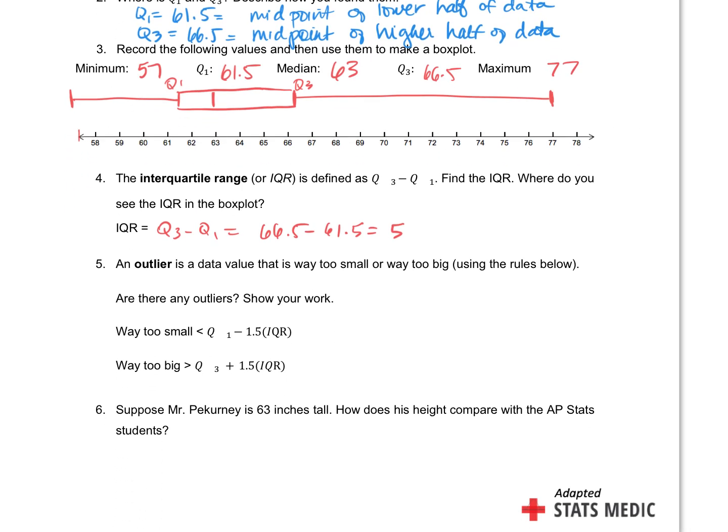Now an outlier is a data value that is way too small or way too big. What does that even mean? Well, mathematically, way too small looks like this. If it's less than the Q1 value minus one and a half IQRs. So let's figure that out. Notice in both equations here, we have to have one and a half IQRs. So let's figure that part out really quick. So 1.5 times 5, right? Gives me seven and a half.